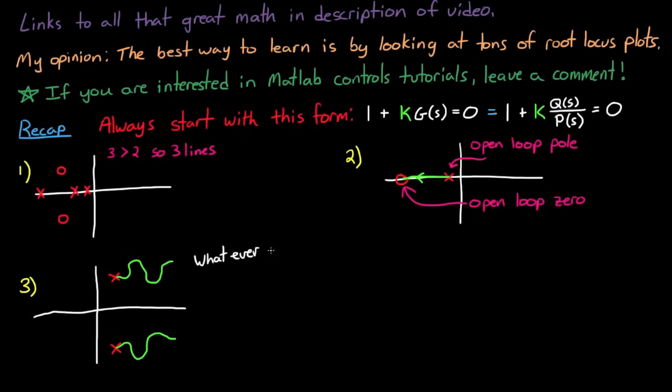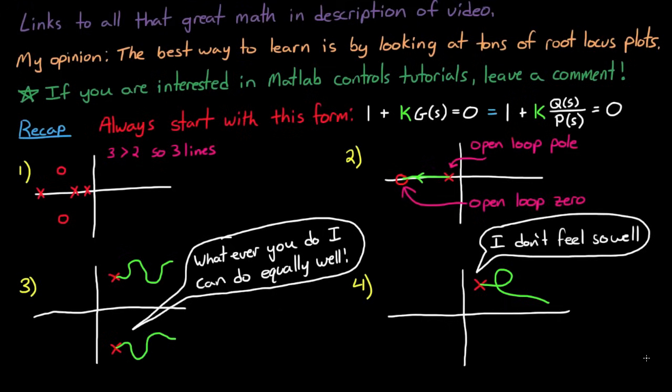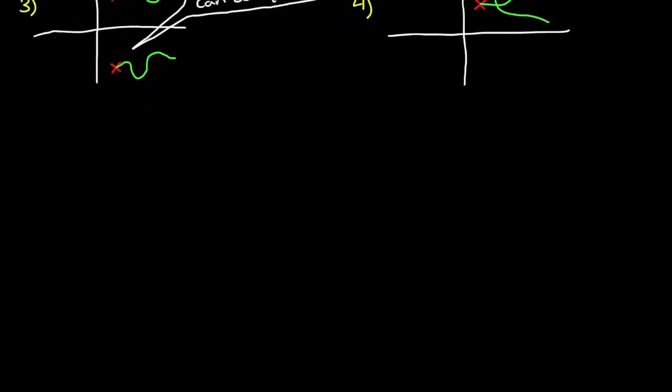And remember that g of s is our open-loop transfer function, so these are the poles and zeros of that open-loop system. The third rule states that complex roots will always come in conjugate pairs, which means that when you're drawing your root locus, make sure it's symmetric about the real line. And the last rule that we talked about in the last video was just that a single line could never cross over itself. Two separate root loci could cross and intersect with each other, but a single one never could.